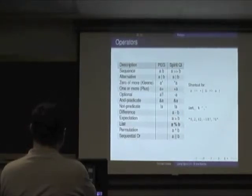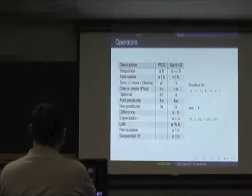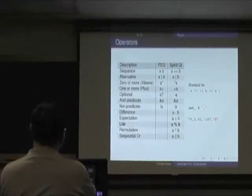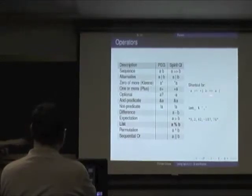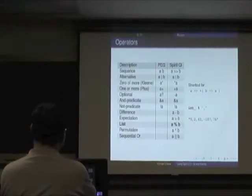List allows us to say A's are delimited by B's — for example, a list of numbers that are comma-separated with no trailing comma. Otherwise this is a pain to write. It's just a nice shortcut.